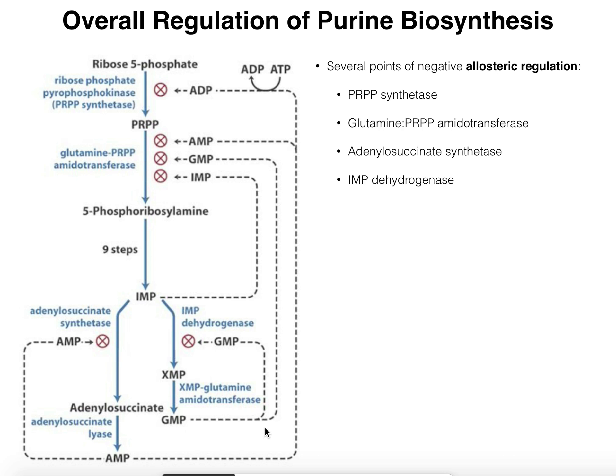ADP is the primary allosteric regulator of PRPP synthetase. If the ADP to ATP ratio is high, that facilitates inhibition of the enzyme. If you flip it to a high ATP to ADP ratio, you have lots of ATP and the enzyme will be active — considering also that ATP is a substrate for this enzyme.